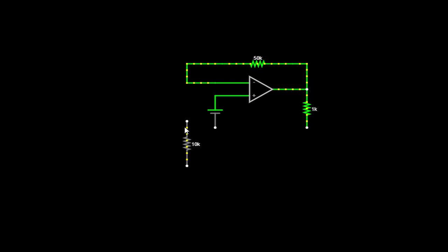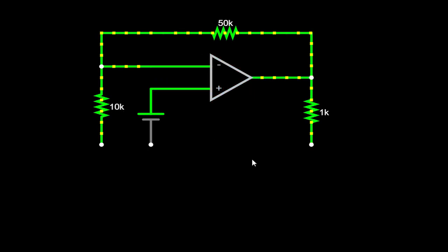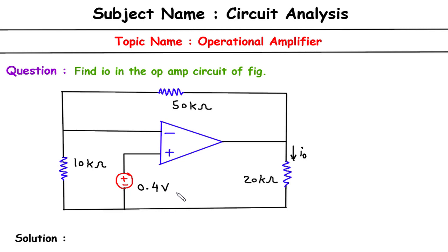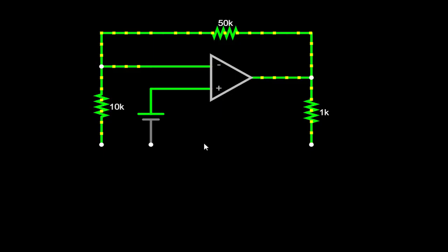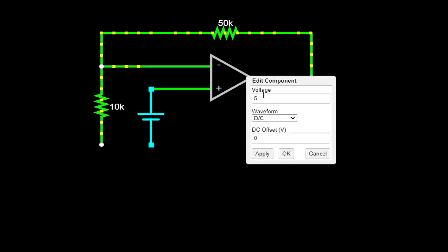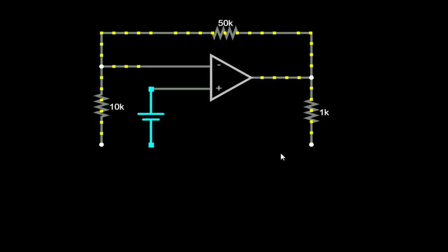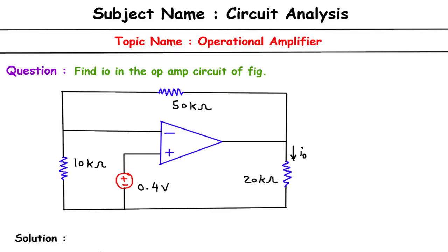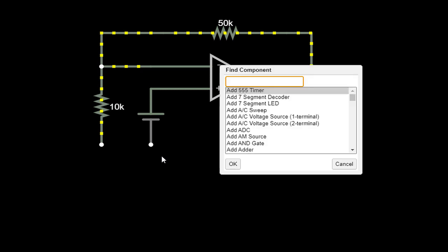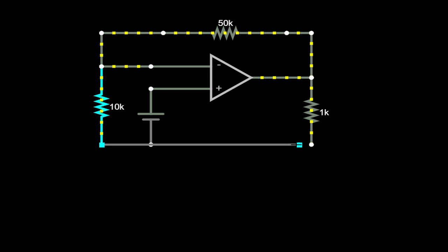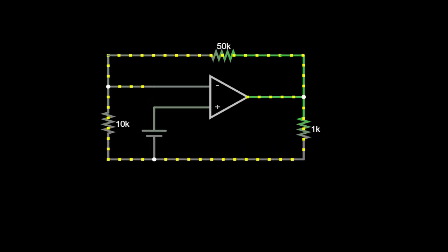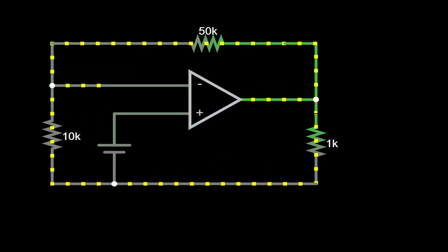We have corrected the bad connections — there are no more red marks. Now we can see clearly: the voltage source is 0.4V, connected accordingly. The wire is connected first here and then like this. Now we have to find I_O, which is the current through this 20 kΩ resistor.